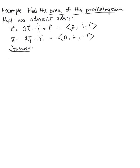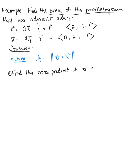We start by recalling that the area of a parallelogram can be defined by the magnitude of the cross product of u times v. So the first thing we need to do is find the cross product of vector u and vector v.